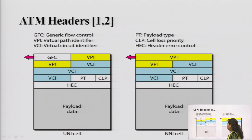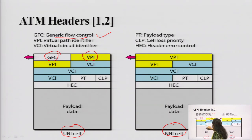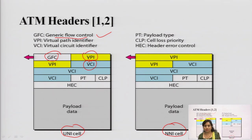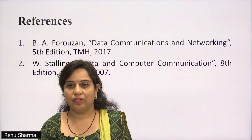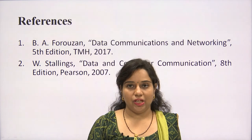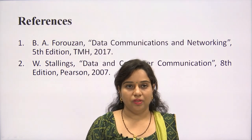ATM headers differ for UNI and NNI cells. The UNI header includes GFC (generic flow control), VPI (virtual path identifier), VCI (virtual circuit identifier), and other fields. The NNI header omits GFC. In summary, today's lecture covered Frame Relay frame formats and identification, and ATM including its header, VP, VC, and TP structure.